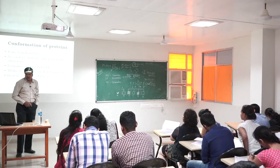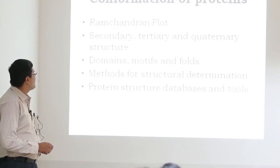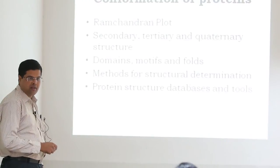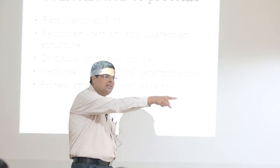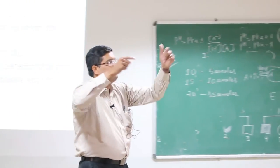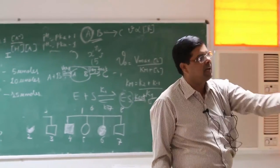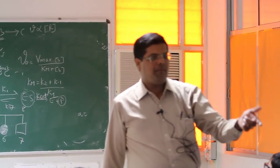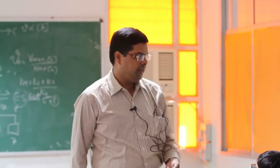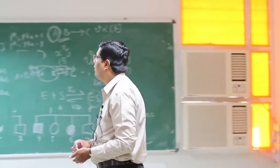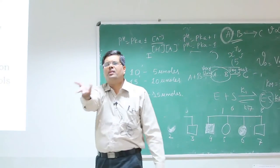Protein conformation: you should know the Ramachandran plot, secondary, tertiary, and quaternary structures. In protein, the quaternary structure has covalent bonds — for example, disulfide linkage is a covalent bond. Secondary, tertiary, and quaternary structures — domain motifs and folds.